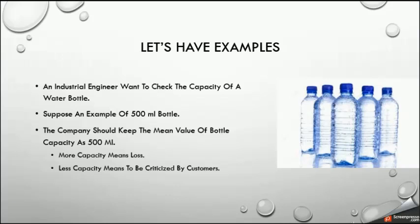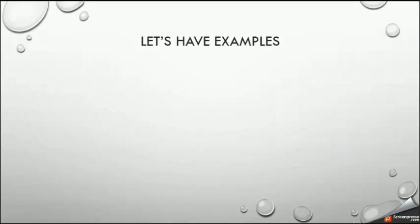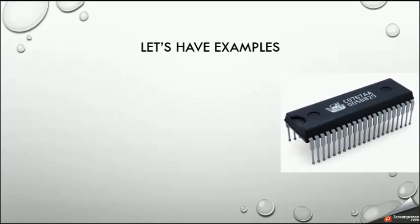Our population is the set of water bottles, and the parameter we are looking for is the mean value — the average capacity across all bottles. We are checking if our production is still at 500 ml for all bottles. We are worried about critical issues: if the capacity is more than 500 ml, we overfill; if below 500 ml, we will be criticized by customers or quality observers.